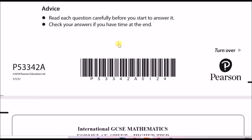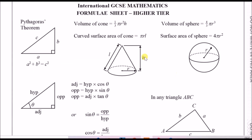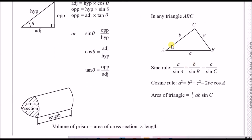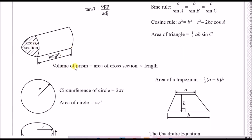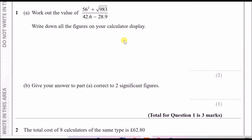It's always necessary to know what formulas you're given. You're always given Pythagoras and trigonometry, some useful 3D shapes, the sine rule and cosine rule, the area of a triangle, and of course the volume of a prism — where you work out the area of the face and multiply by its length.